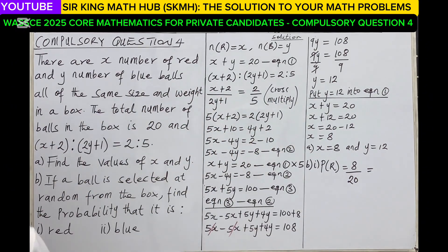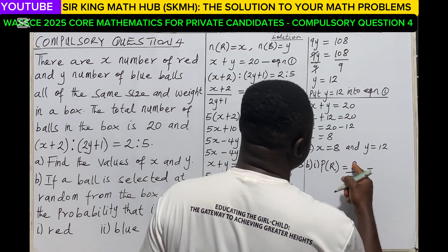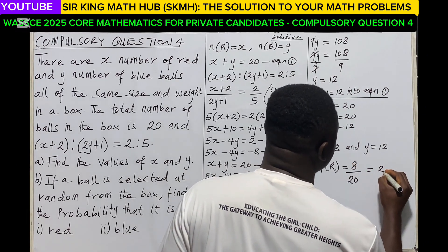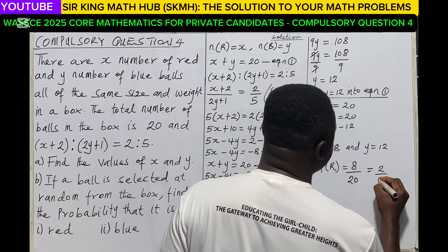8 out of 20 is a common fraction but not in its lowest form. So when you reduce this to the lowest form, 4 goes into 8, that is 2. Then 4 goes into 20, that's 5. So the probability of red is 2/5.